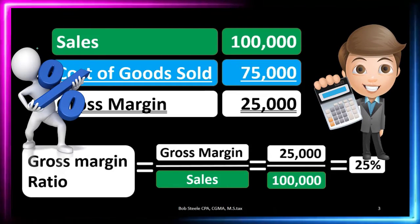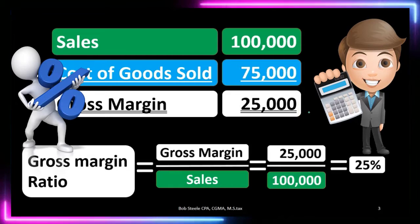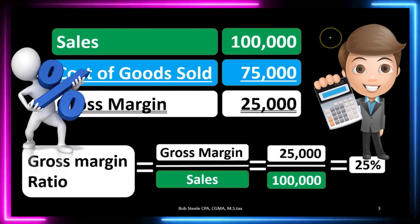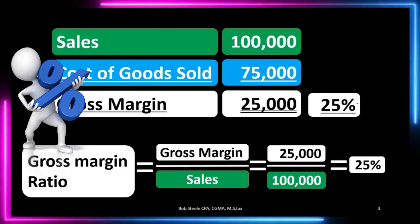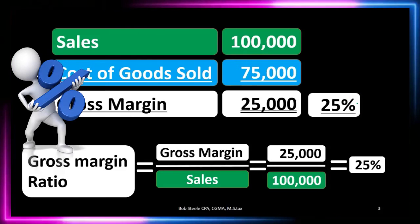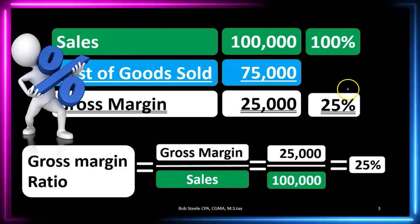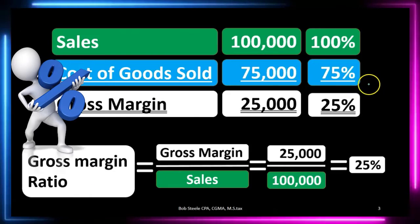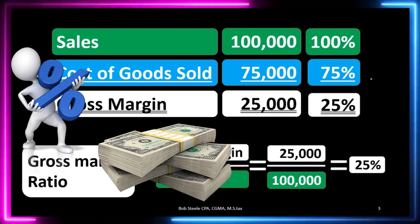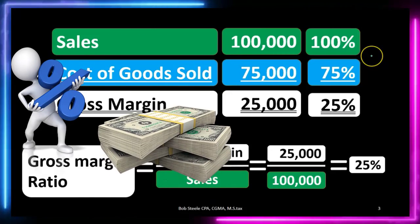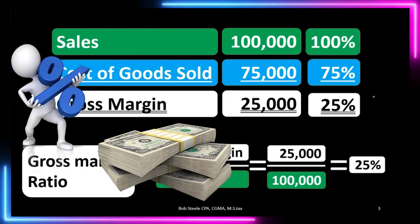Moving the decimal two places and adding a percent sign gives us 25%. That means for every dollar of sales, we're getting 25 cents after cost of goods sold. We can also see this as: sales over sales is 100%, cost of goods sold ($75,000 / $100,000) is 75%, leaving 100% minus 75% equals 25%. That's another way to look at the gross margin ratio.